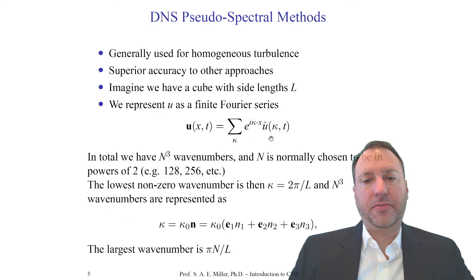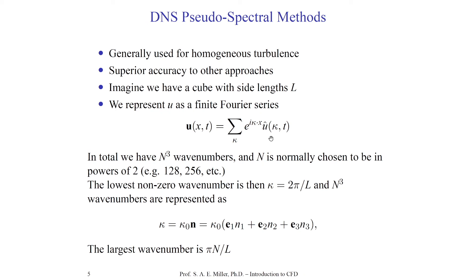In total for three dimensions, we'll have N cubed wave numbers. N will normally be chosen to be a power of two, because of the fast Fourier transform, which requires the number of discrete points to be a factor of two — for example, 128, 256, 4096, and so on. These are typical values used for these types of calculations.